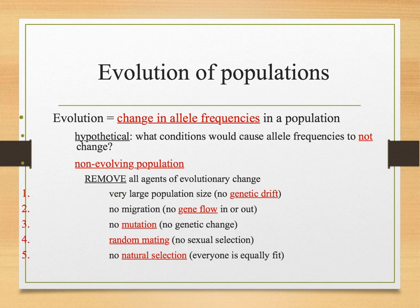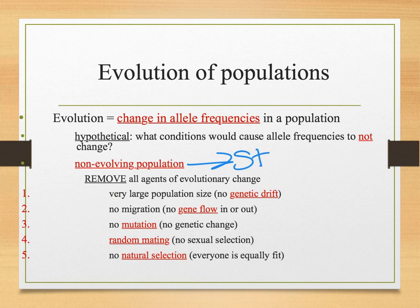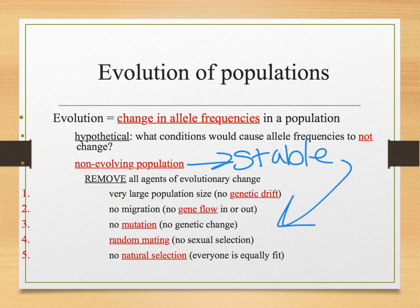In order for a population not to evolve — to become stable — you have to remove all five agents: no genetic drift, no gene flow, no mutation, random mating, and no natural selection. There are some very secluded populations where you see this. We'll talk more about these five agents.